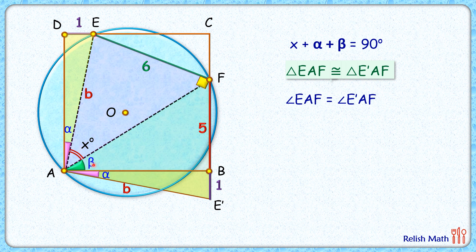In the first equation, let's replace alpha plus beta by x. We get 2x equals 90, or x equals 45 degrees. That's what we have to find and that's our answer.